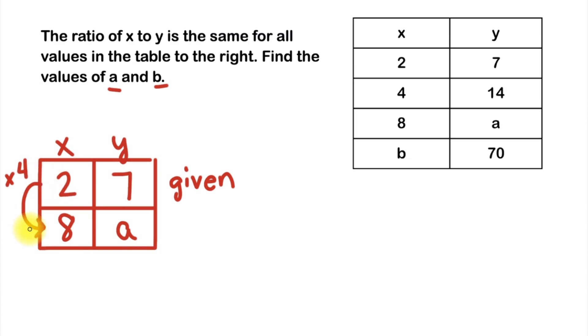And whatever you do to the left side of the ratio table you should do to the right side. So what do you think we'll do to 7? You got it, we're going to multiply it by 4. And when we do that, 7 times 4 gives us 28, so that means that the value of a is equal to 28.